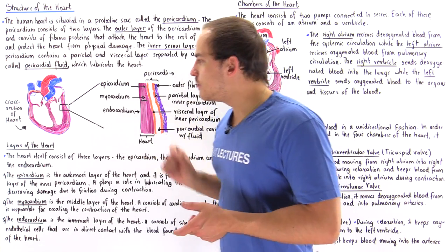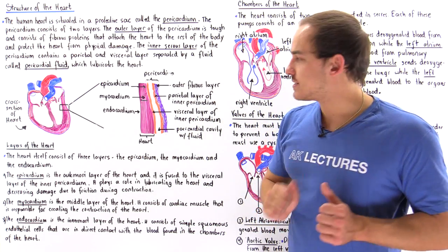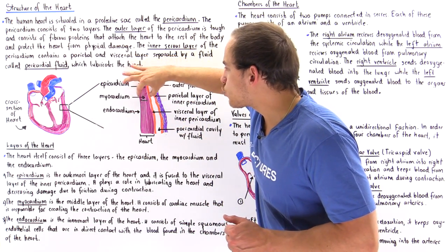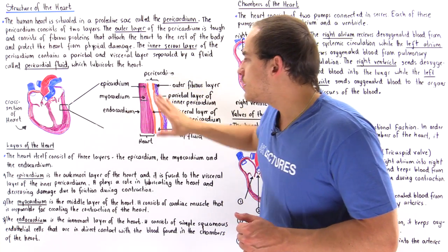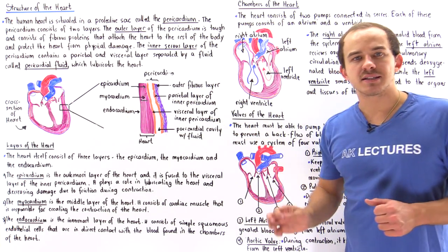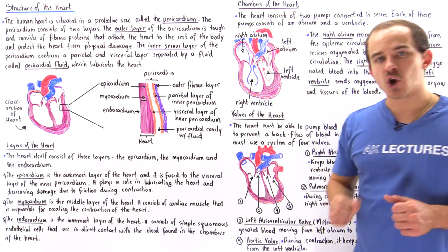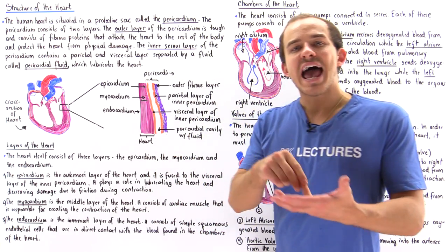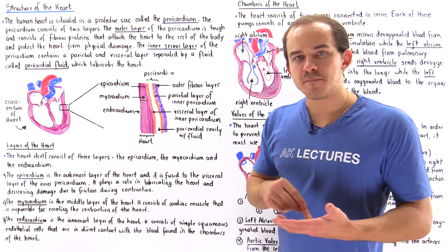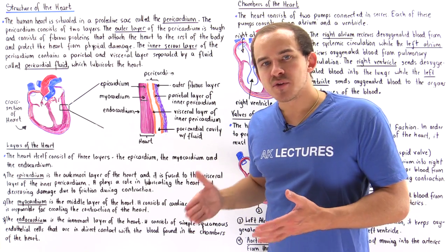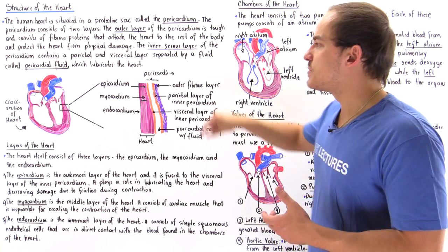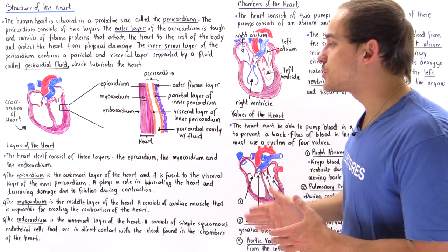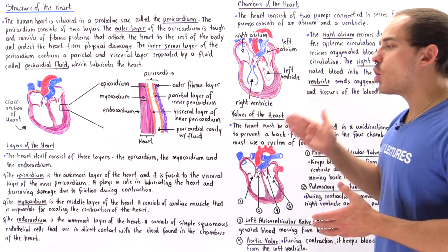Now let's move on to the actual heart itself. The red segment of the heart consists of three individual layers. The heart can be divided into: the epicardium, the outermost layer; the myocardium, the middle layer; and the endocardium, the inner layer of the heart.